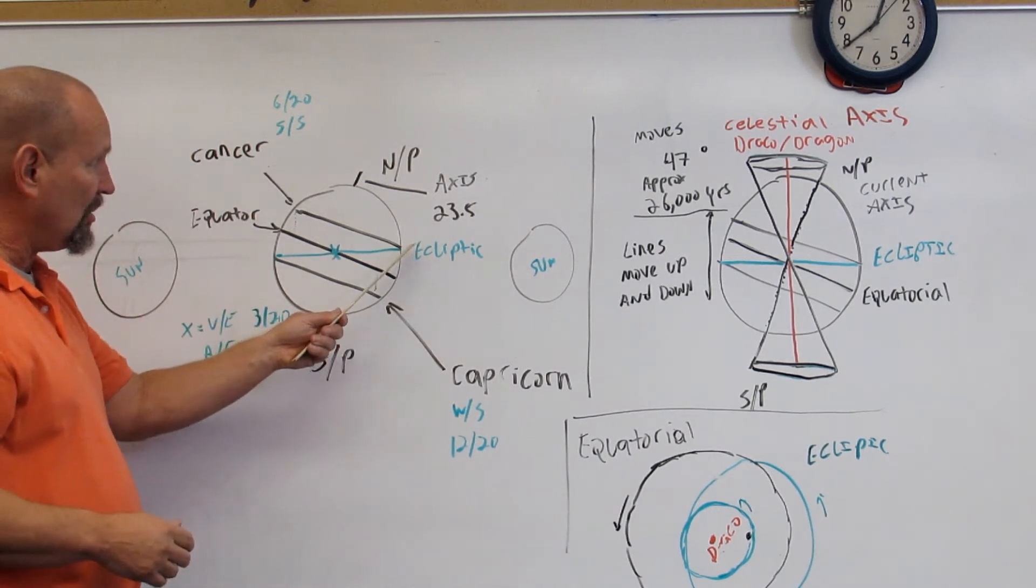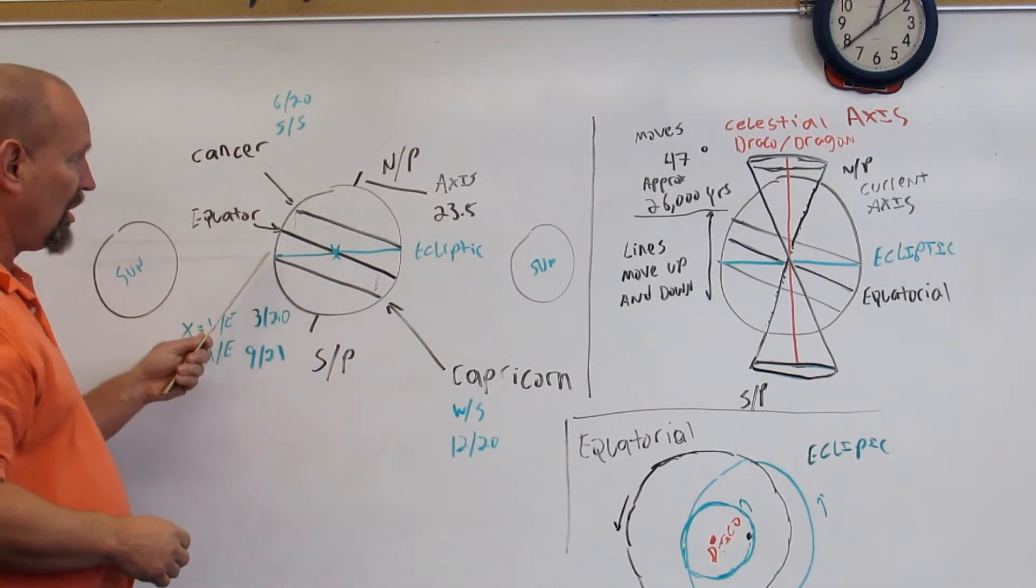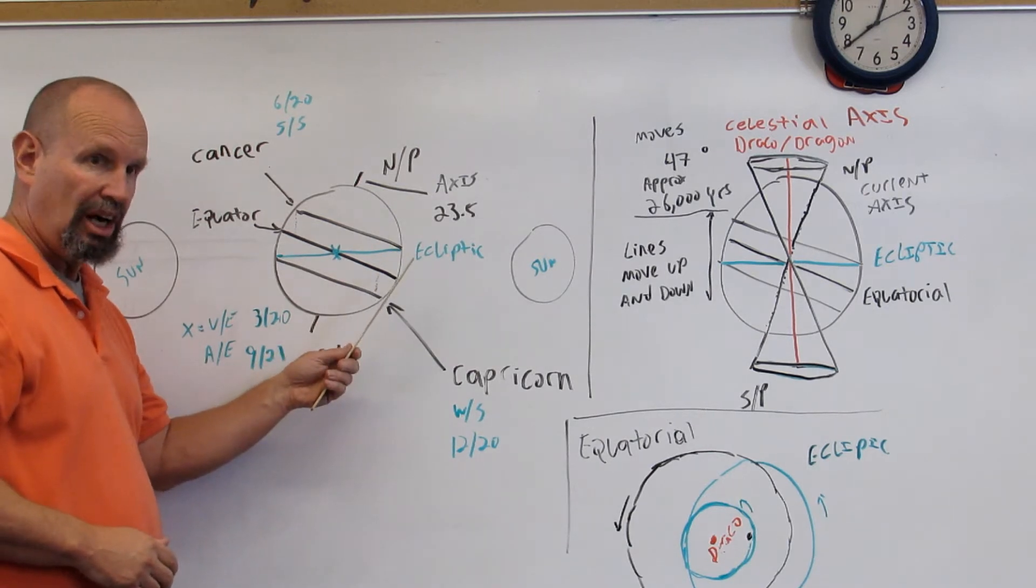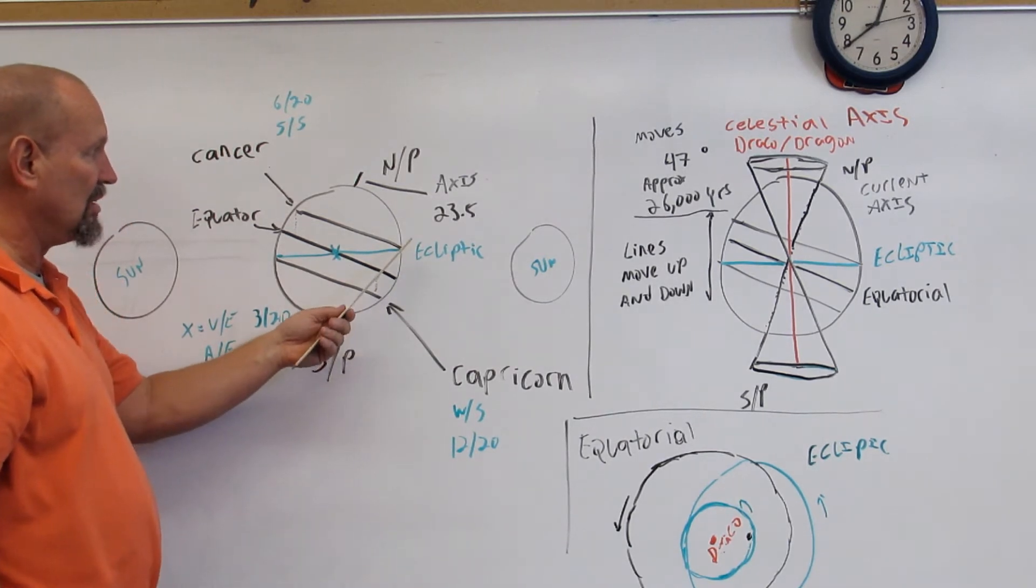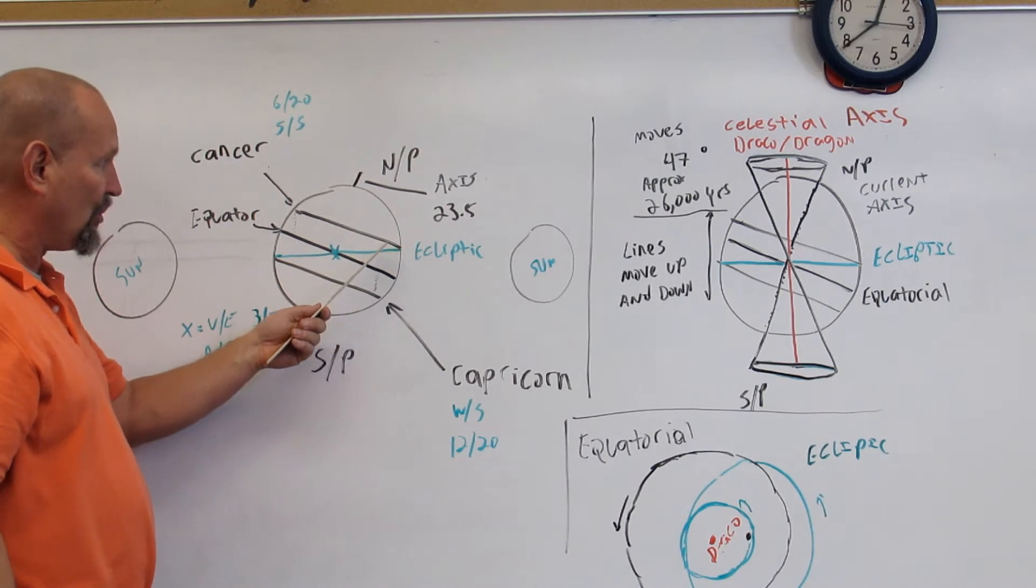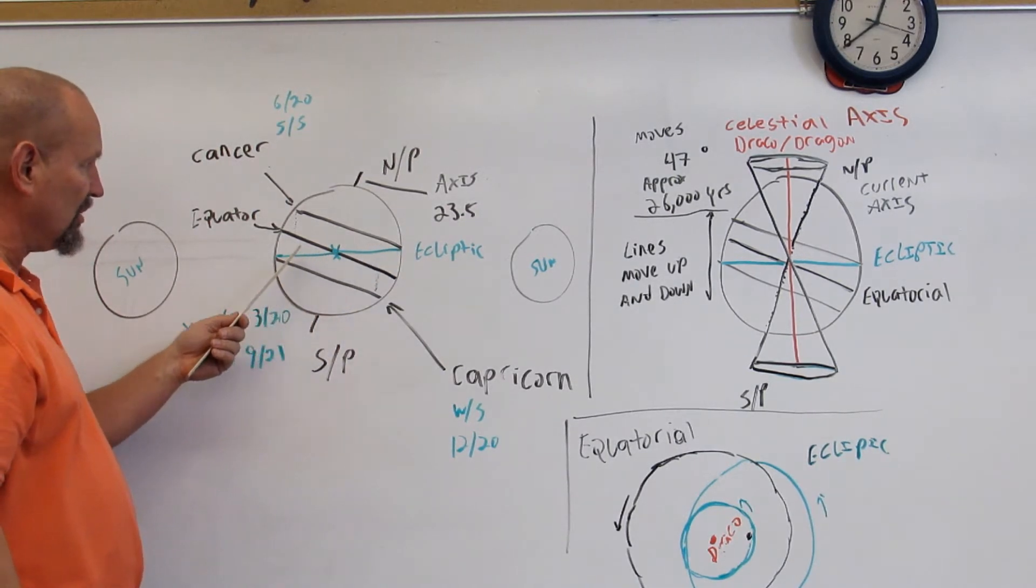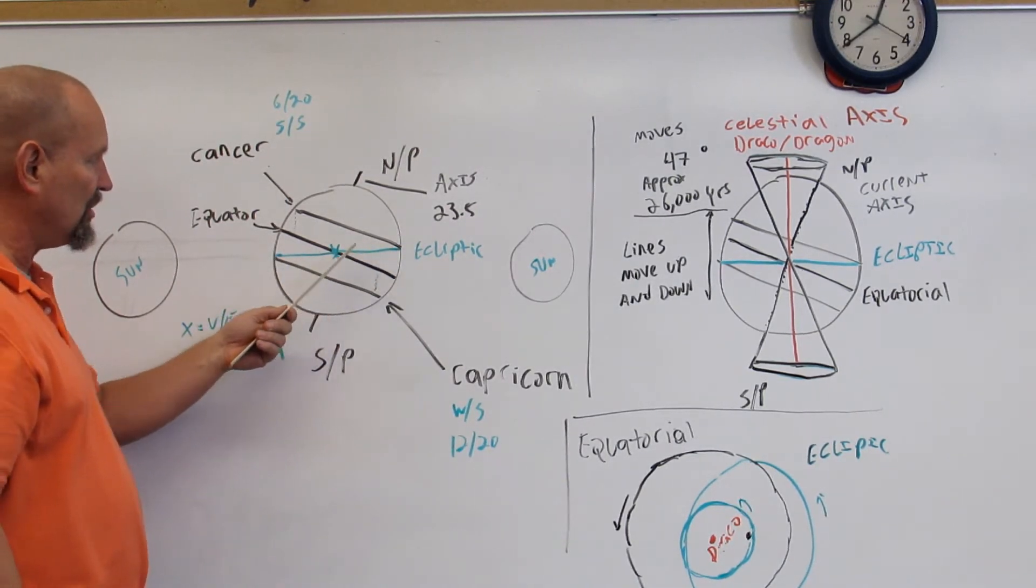This line right through here is called the ecliptic line. It's the line that the Sun travels across as it travels across the Earth. The light of the Sun moves across the Earth here.